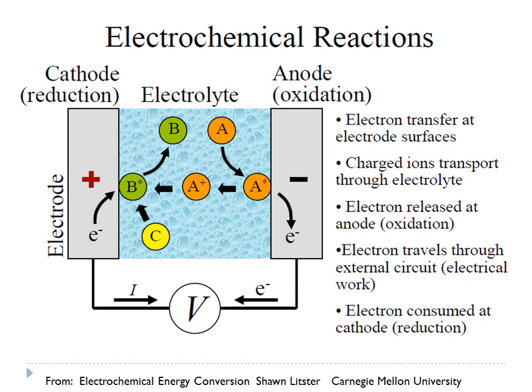Generally speaking, for electrochemical reactions, you're going to have a cathode and an anode separated by some kind of electrolyte. At the cathode, where reduction is taking place, electrons go from the electrode to a species — for example, oxygen — and we say that the oxygen gets reduced. At the anode, where oxidation is occurring, an electron leaves a gas or liquid molecule and goes to the electrode. So we say that the fuel is being oxidized.